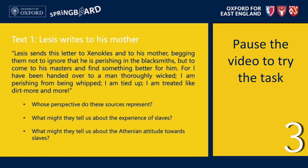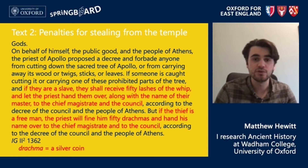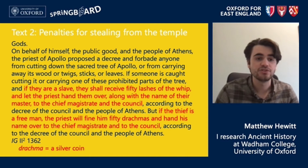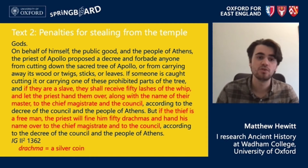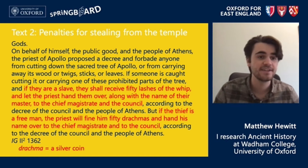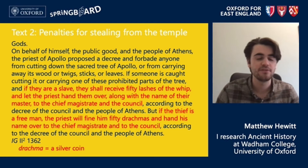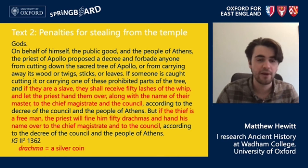My second inscription is also from classical Athens but from a very different context — quite boring and repetitive. It is an official document recording the penalties for stealing from a sacred temple to the god Apollo. The text reads: 'On behalf of himself, the public good and the people of Athens, the priests of Apollo proposed a decree and forbade anyone from cutting down the sacred tree of Apollo or from carrying away its wood, twigs, sticks or leaves.'